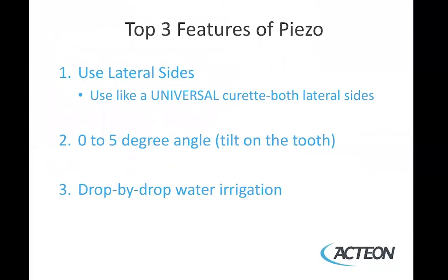The top three features of piezo are: first, you use the lateral surfaces of the tip — very much like using a universal curette where you have both lateral sides available to you. It's not like a Gracie, which only has one cutting edge. So, for example, you can transfer your skills from using a Columbia 1314, 4R4L, or a Barnhart 5/6, which are all universal curettes. Likewise with piezo, you use both lateral sides and not the back of the instrument.